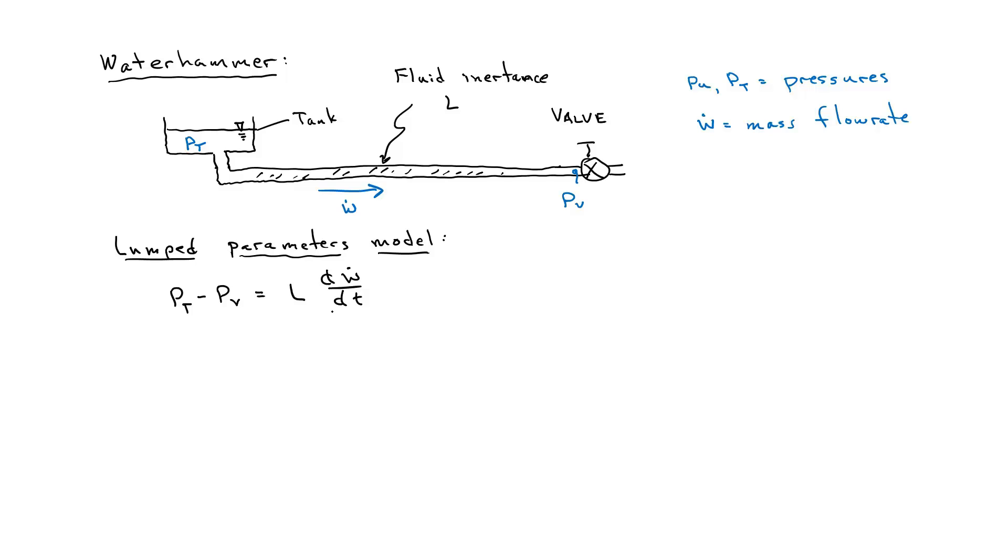The inertance has a tendency to keep the flow rate from changing. It acts like inertia. So now we have a pressure difference between the tank and the valve which is causing the fluid to flow through here.